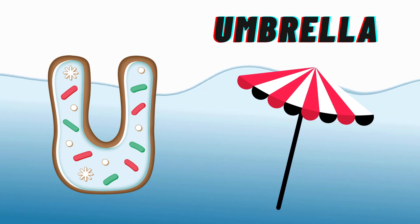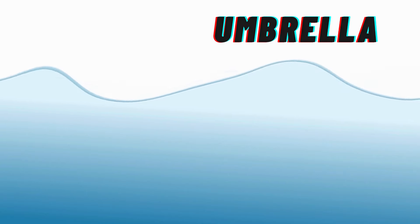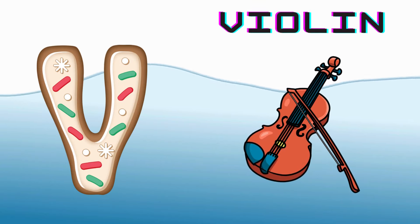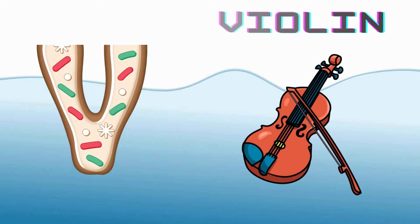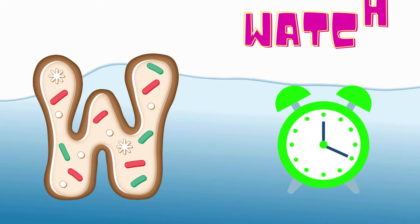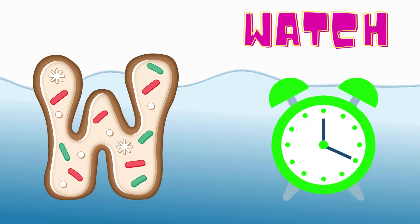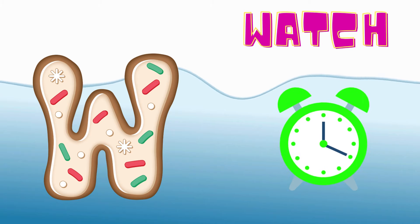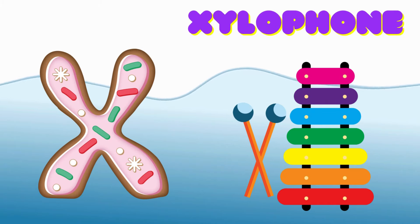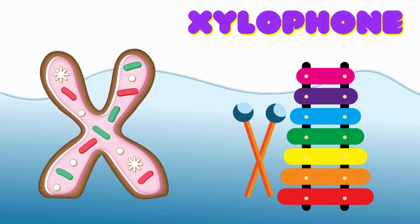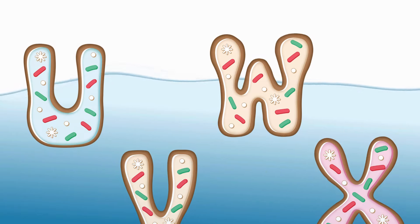U is for Umbrella, U-U-Umbrella. V is for Violin, V-V-Violin. W is for Watch, W-W-Watch. X is for Xylophone, X-X-Xylophone.